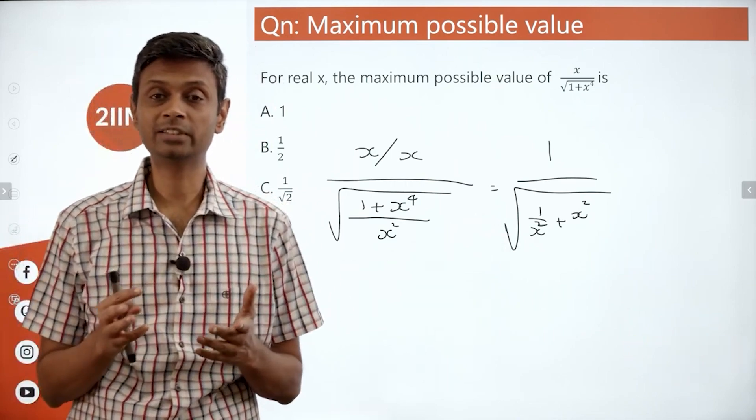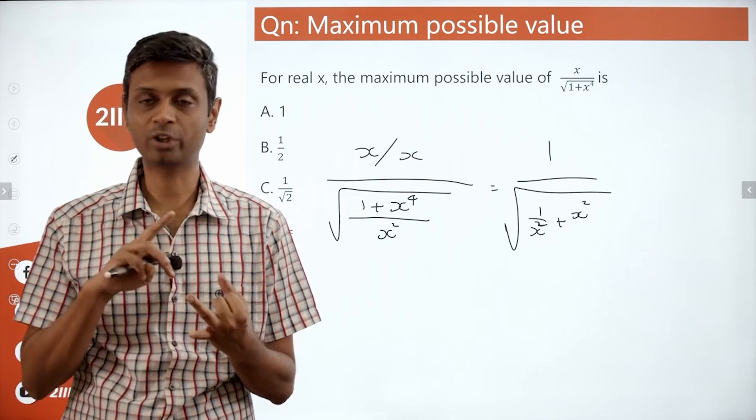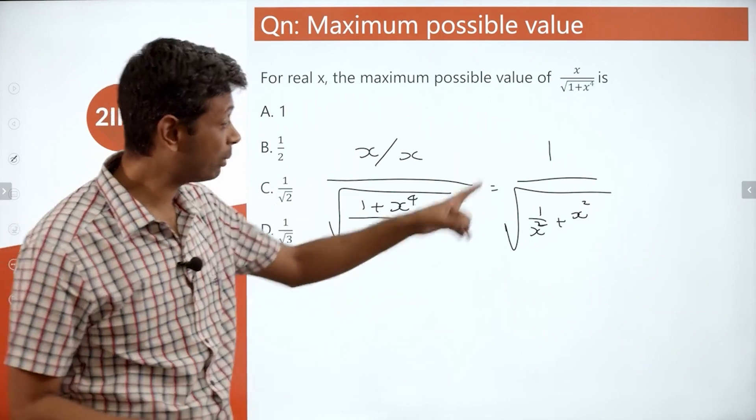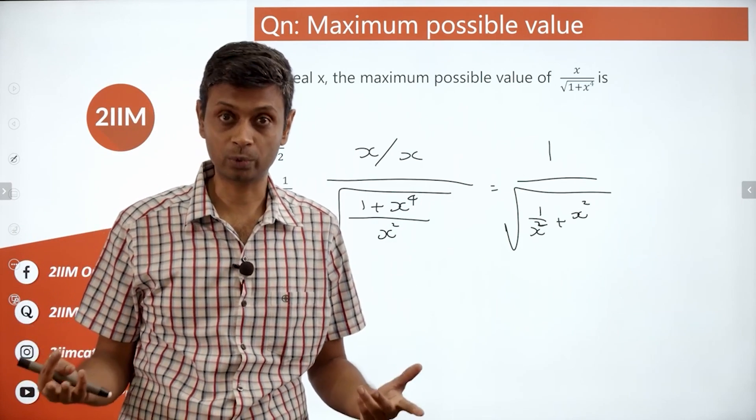x plus 1 by x is either greater than or equal to 2 or less than or equal to minus 2. 1 by x square plus x square is always greater than or equal to 2.